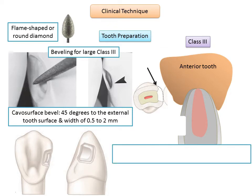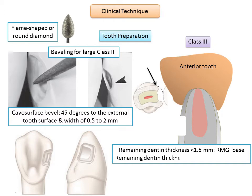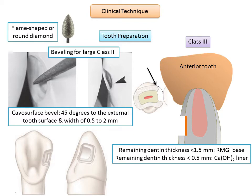If the remaining dentin thickness is judged to be less than 1.5 millimeters in the deepest portions of the preparation, apply an RMGI (resin-modified glass ionomer) base. If the remaining dentin thickness is 0.5 millimeters or less, a calcium hydroxide liner should be placed as an indirect pulp capping agent. Alternatively, MTA can be used as a direct pulp capping material. The calcium hydroxide or MTA liner should always be covered with an RMGI base, which seals the area and prevents the etchant from dissolving the liner.